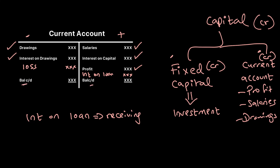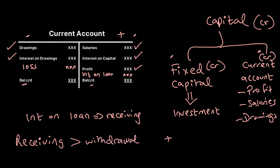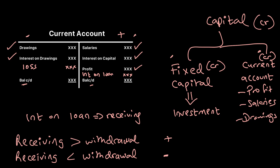Once all items are on the credit and debit sides we find the balancing figure. The credit side is the receiving side; the debit side is the withdrawal side. If the receiving side is greater than withdrawals, it increases capital because partners have invested further or have money owed to them. If withdrawals exceed receipts, it reduces capital since the partners would have over-withdrawn. The capital figure for the statement of financial position equals the fixed capital account plus the current account balance for each partner.